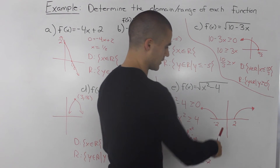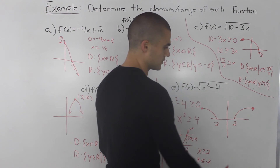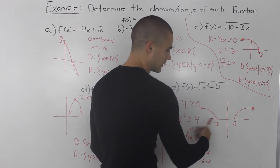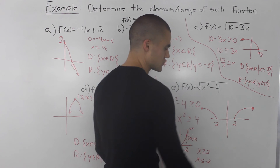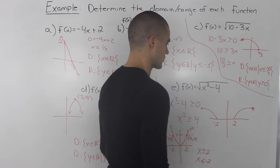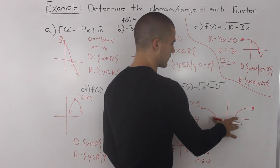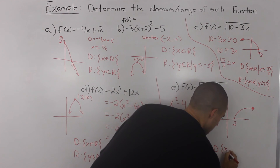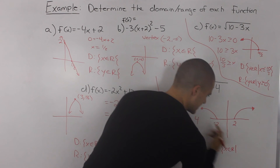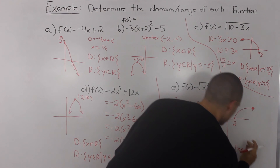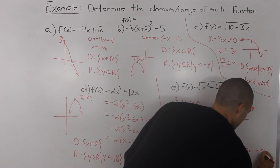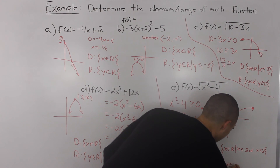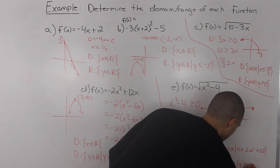If we graph this function, it would look something like this. You can try making a table of values starting with x = 2 and values greater than 2, and x = -2 and values less than -2. If you try x values between -2 and 2, you'll find the function is undefined there. So the domain is: x ≤ -2 or x ≥ 2. And the range: y can be anything as long as y is greater than or equal to 0.